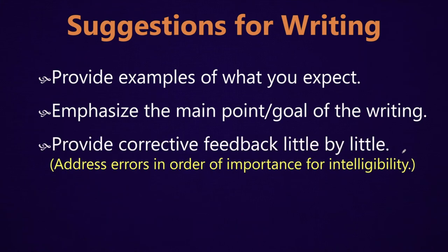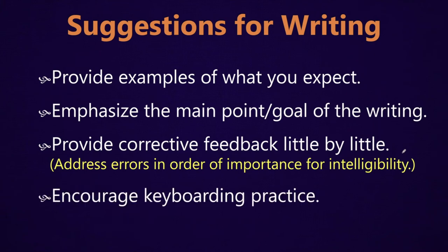Also, when giving feedback or correcting anything, try to give it little by little. Try to address their errors in order of importance when it comes to intelligibility — pinpoint what's giving you the biggest difficulties with understanding them. Zero in on one, two, or maybe three big things, give feedback on those, and just choose to ignore the other things for now. If you give too much feedback at one time, it's going to overload them. But if you can show them one or two areas where they're making consistent mistakes, it'll be easier for them to make a systemic fix. Also, try to encourage keyboarding practice — if they become better at keyboarding, it will help them to more easily put their thoughts in writing without wrestling with the typing program and losing their train of thought.